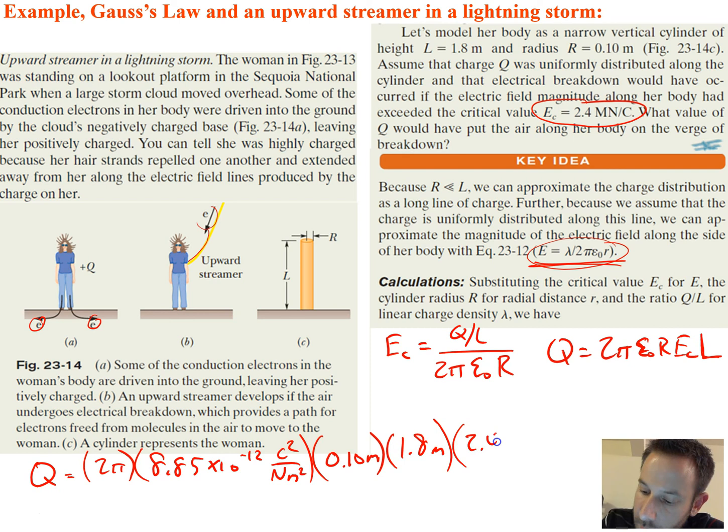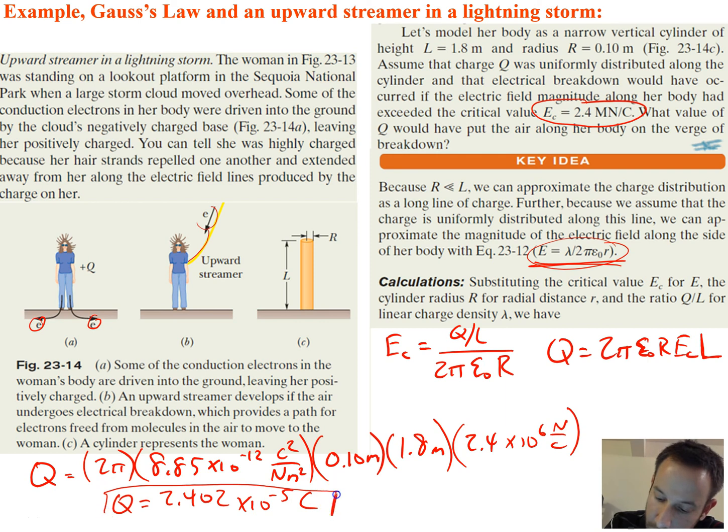Times E, which is our critical electric field, so 2.4 times 10 to the 6th newtons per coulomb, because it was mega newtons per coulomb. Plugging this into a calculator, we get 2.402 times 10 to the negative 5th coulombs. Okay, that's it for this lecture. Thank you.